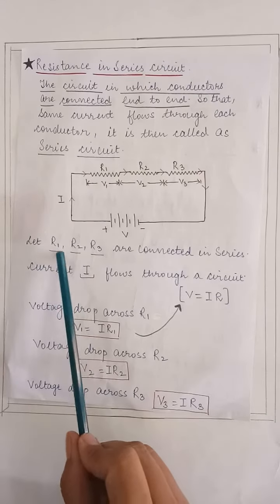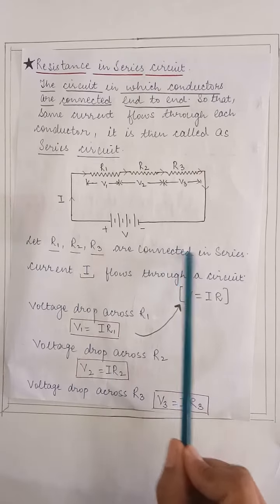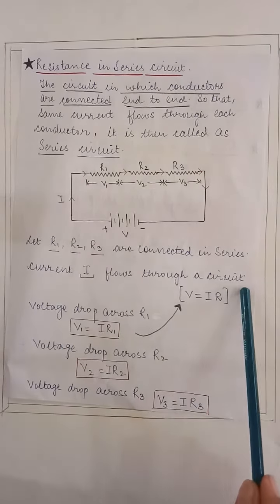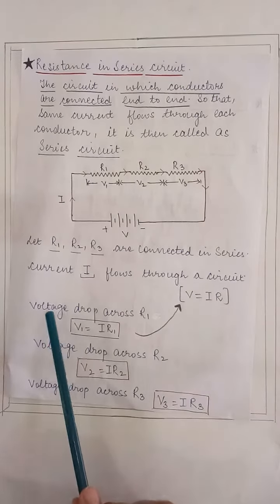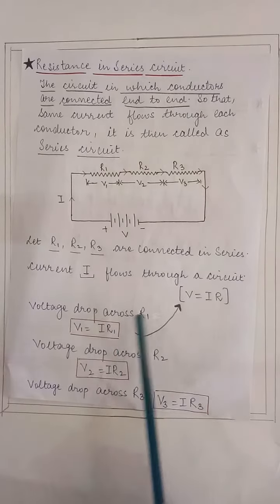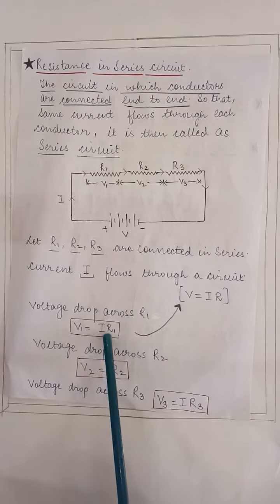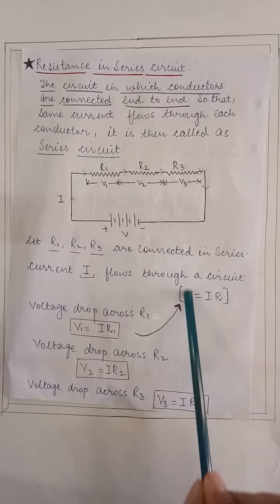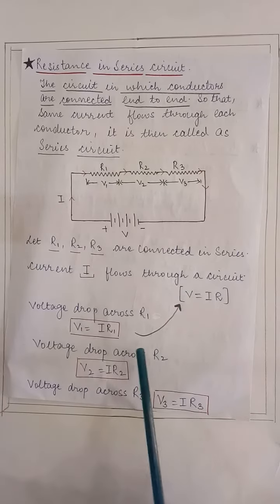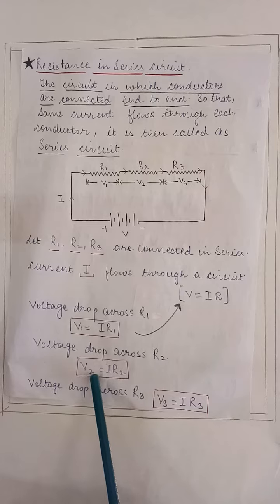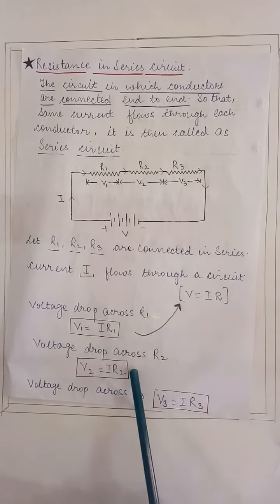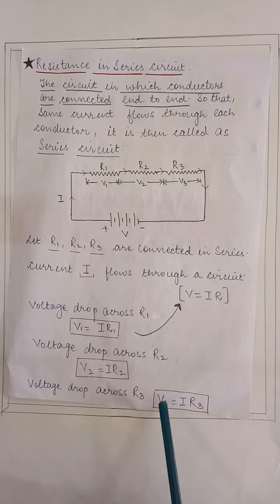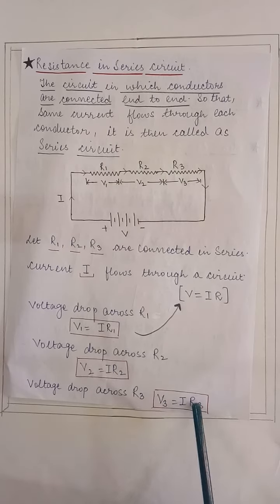Let R1, R2, R3 are connected in series. Current I will flow through a circuit. Voltage drop across resistor 1 will be V1 equals IR1. From where it has come? From Ohm's Law. Voltage drop across resistor R2 will be V2 equals I into R2. Voltage drop across resistor R3 will be V3 equals I into R3.